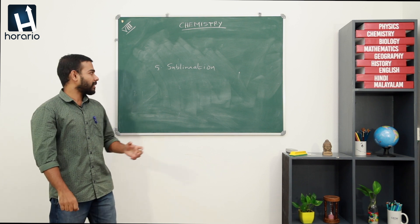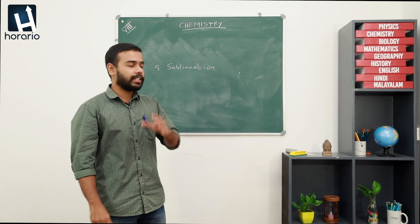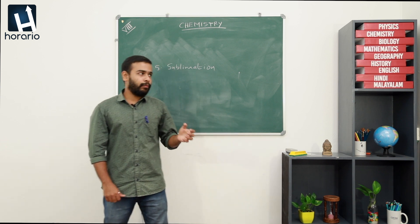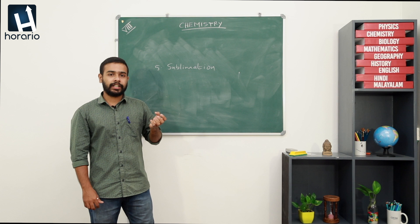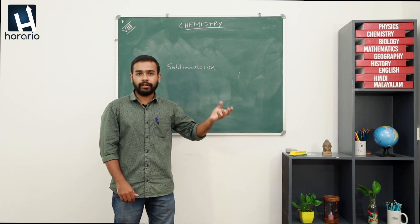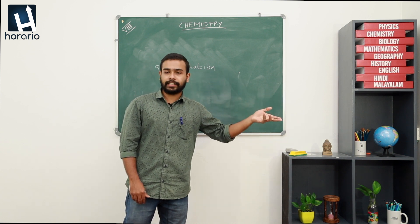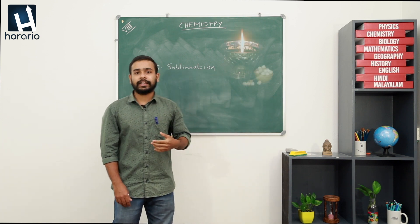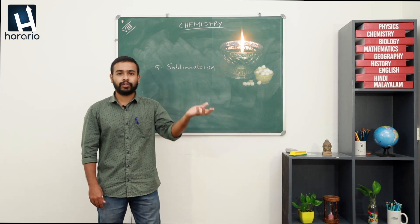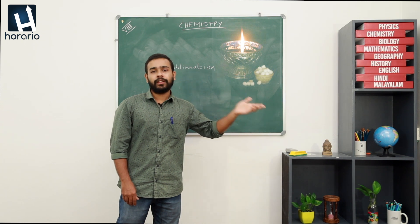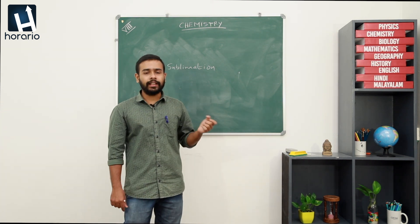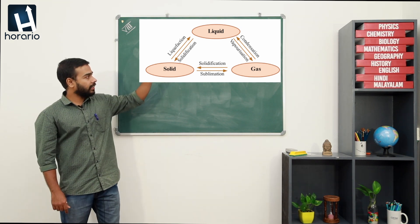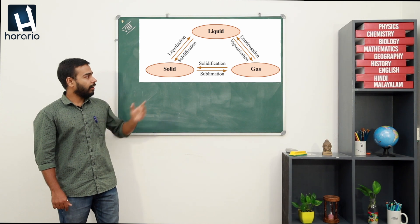The fifth one is sublimation. Sublimation is an interesting change of state. It is the process of changing of a substance from its solid state directly into gaseous substance. When ice cubes are exposed to sunlight, first they become liquid and then gaseous. But in sublimation, the solid substance directly changes into gaseous substance. For example, camphor — if you expose camphor to sunlight, it will directly change into gaseous substance. These are the five changes of state. You will have a cyclic diagram of these changes — have a look at it.